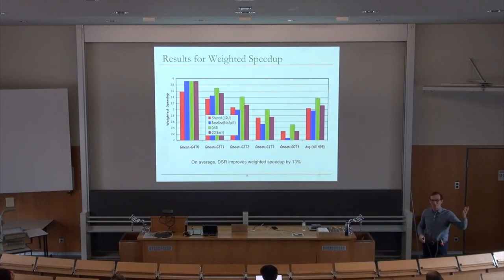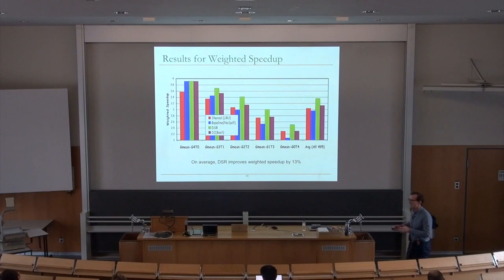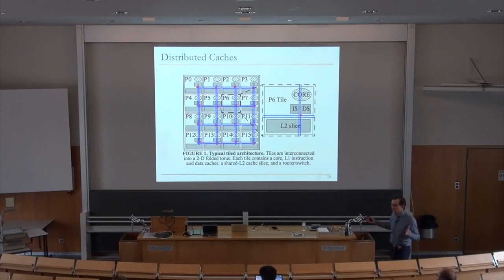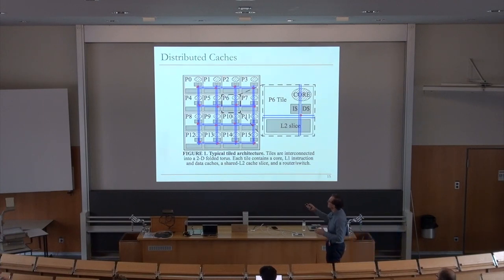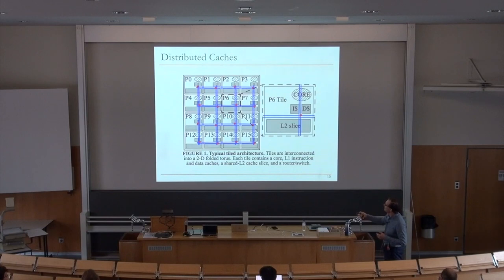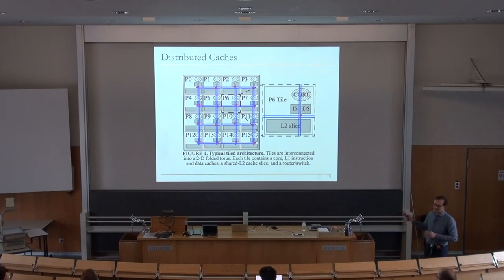A version of cache partitioning is also implemented in some other systems, so the jury is still out — there's still improvement needed in caching algorithms. Caches are becoming increasingly distributed, especially if you want hundreds of cores on a chip. You can't have one huge cache servicing everything, so you distribute the cache with an interconnect. If a core wants to access an L2 slice elsewhere it needs to send a message over the network.